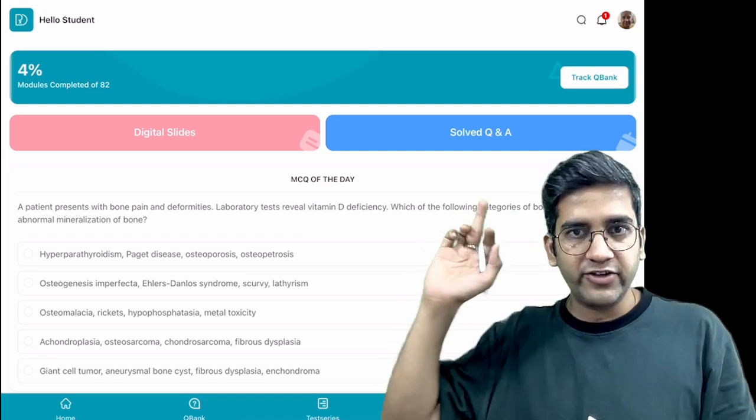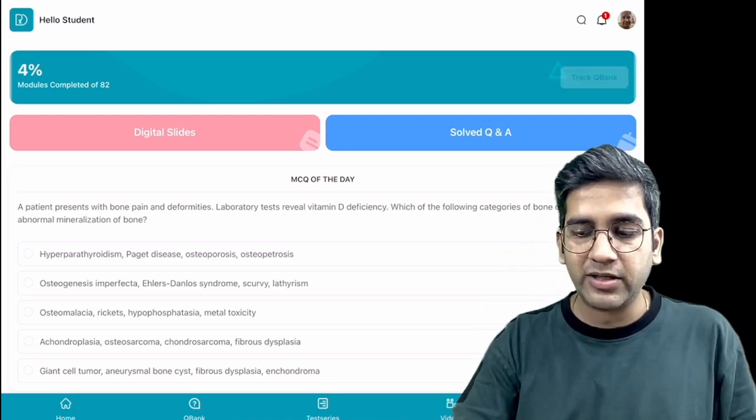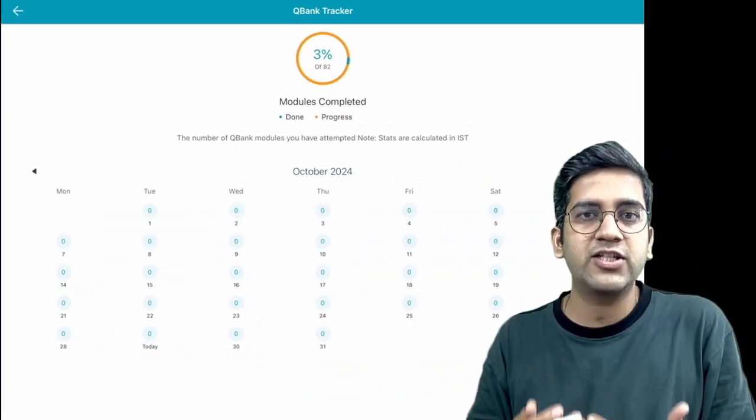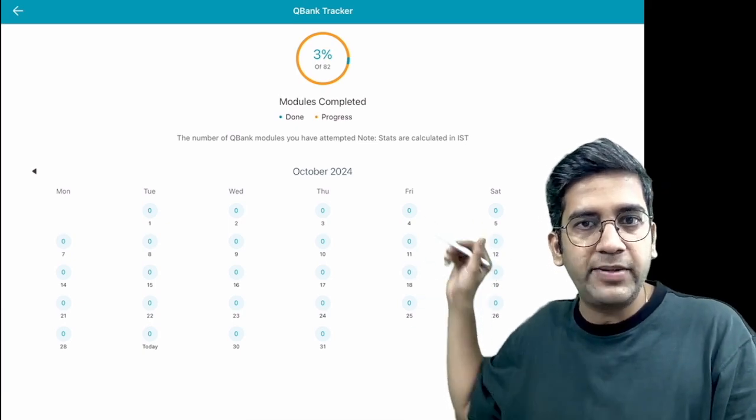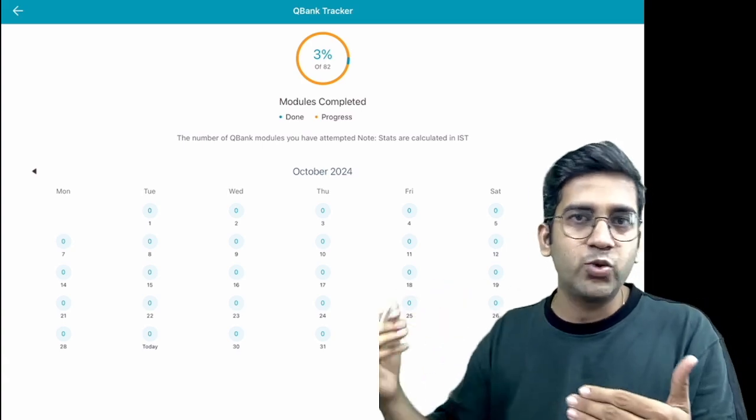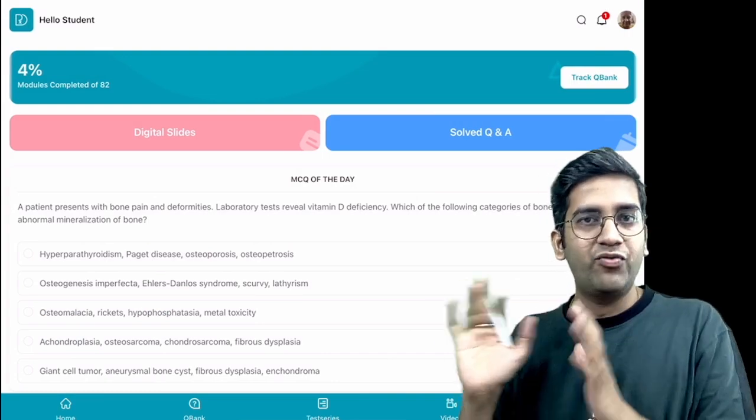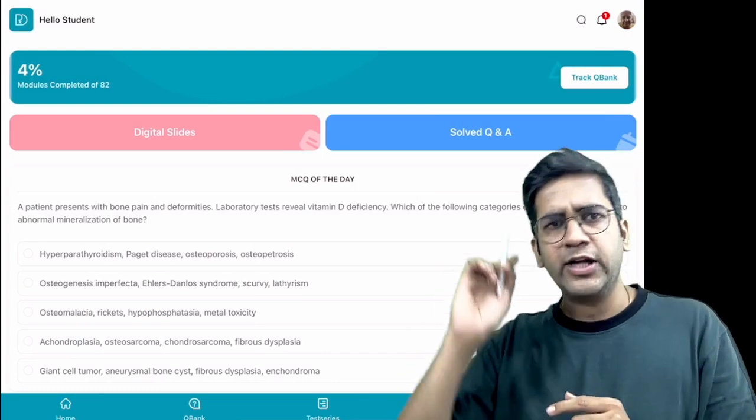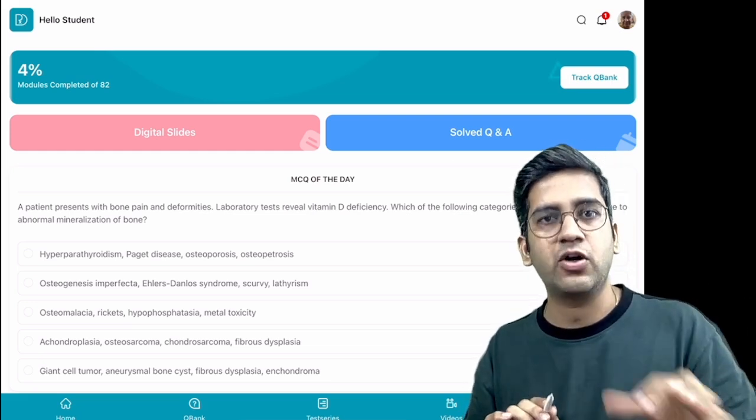Once you enter the app, there's the home page. The first thing on top you have is something called Track Your Cuban. This is primarily for someone preparing for NEET SS or FRC Path exam, where it will tell you exactly how many modules you've completed every day. It also gives you a rough estimate of how many percent of the modules you've completed.